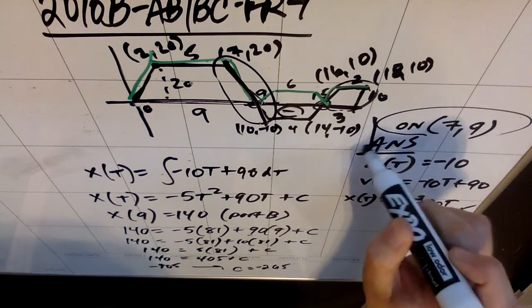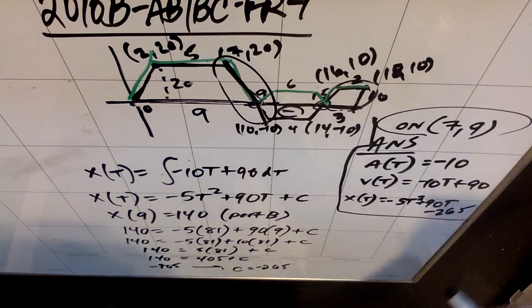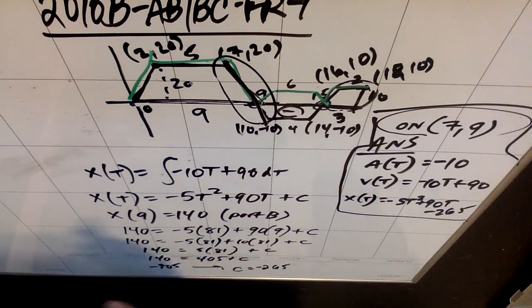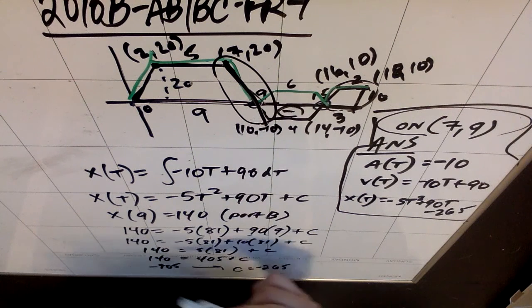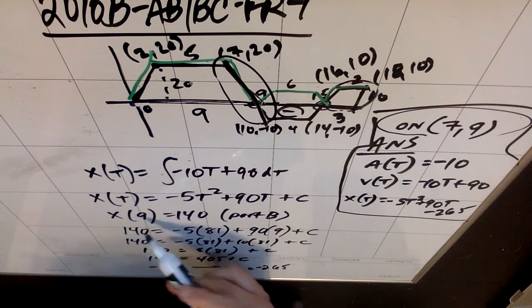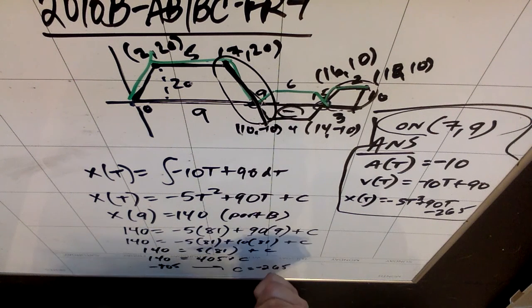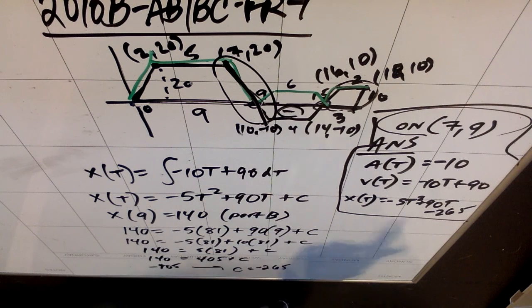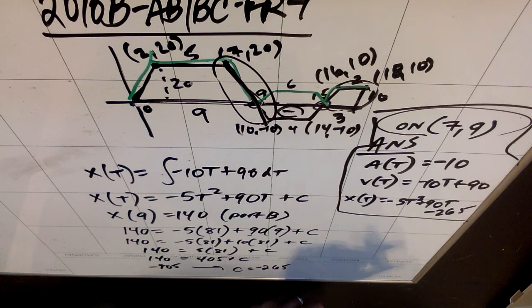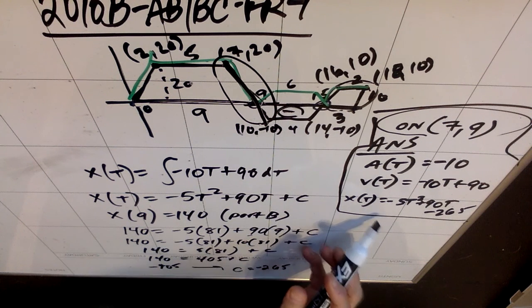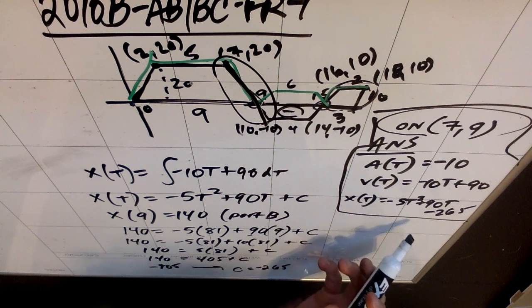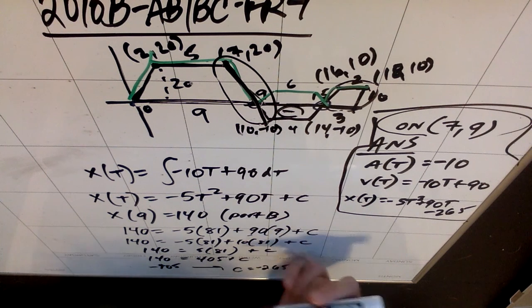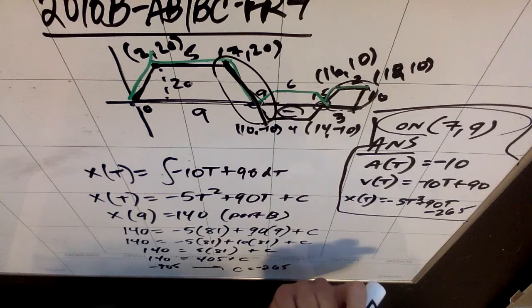The key is that you had to use an X point somewhere in the 7 to 10 window. The AP solution used X of 7, but since I already knew X of 9 equals 140 from Part B, I just used that one.